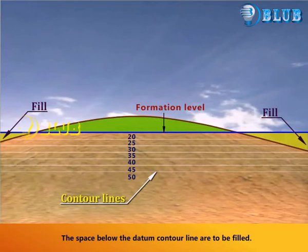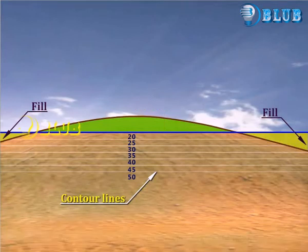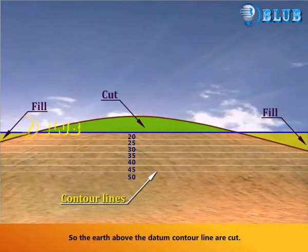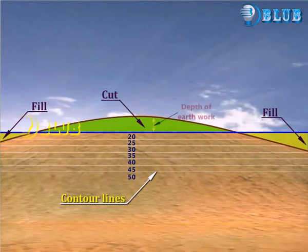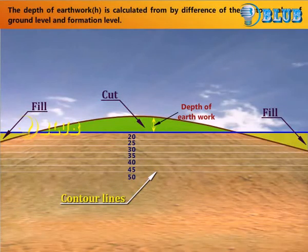The spaces below the datum contour line are to be filled, and the earth above the datum contour line are cut. The depth of earth work is calculated by the difference of the contour value of ground level and formation level.